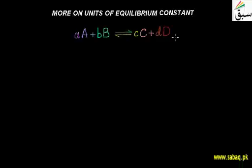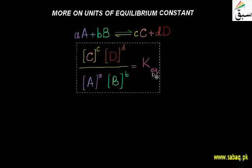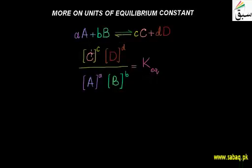This reversible reaction proceeds forward and can also go backwards. We derived the equilibrium constant K where K equals the concentration of C raised to the power of c moles, times concentration of D raised to the power of d moles, divided by the concentration of reactants raised to the power of their respective moles. This is how we derived the equilibrium constant.